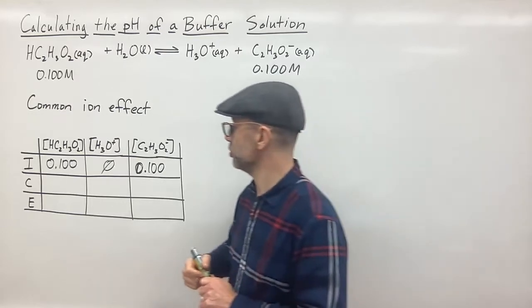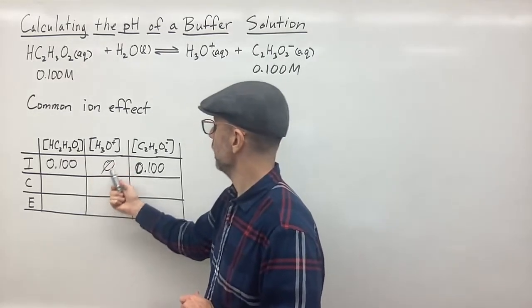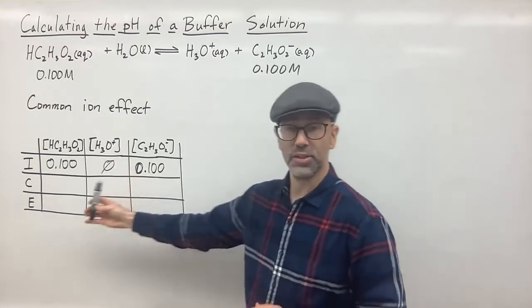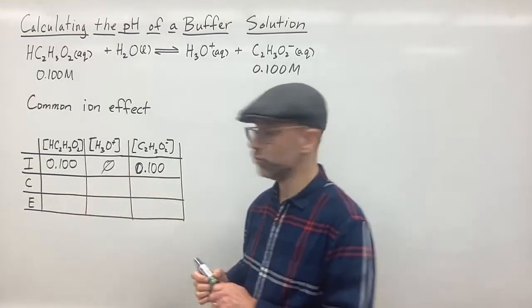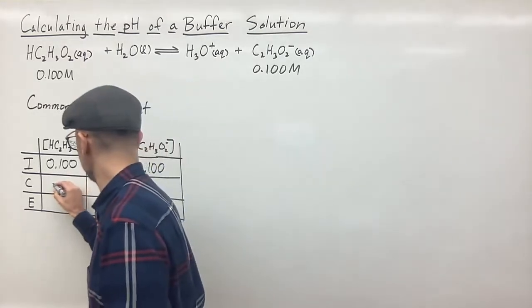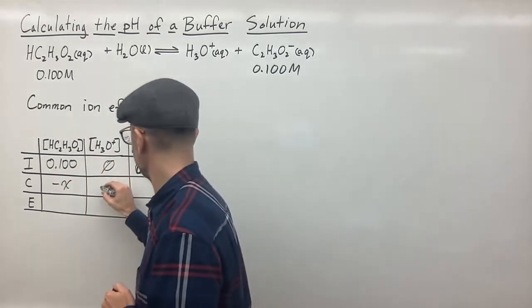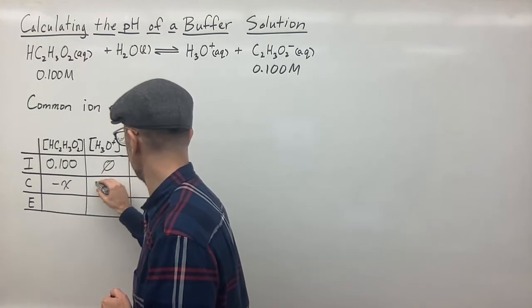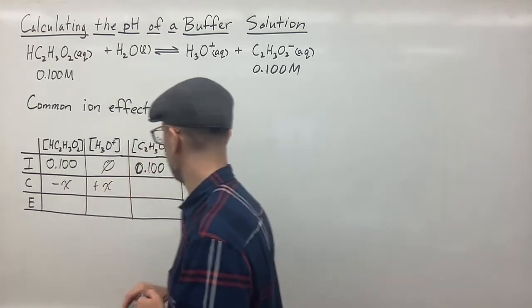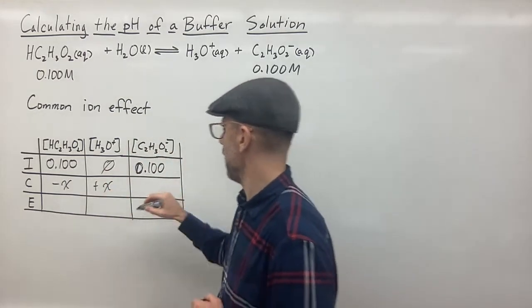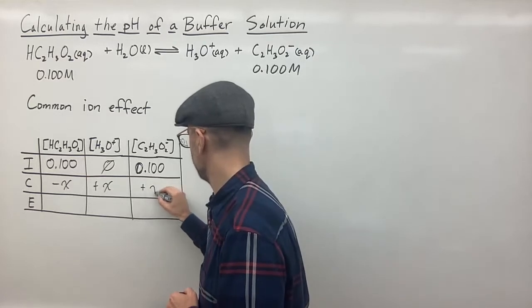And then we just do the ICE table like we normally do. We have the change. So since we have zero here in our product, it's going to shift this way. So we're going to lose some of our acid. So that's going to be a minus x there. We're going to gain some H+, our hydronium ion. So it's going to be add a plus x there. And we're going to add the same amount here. We have a plus x here.